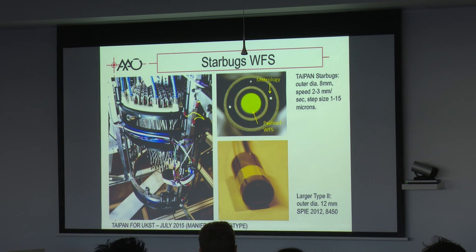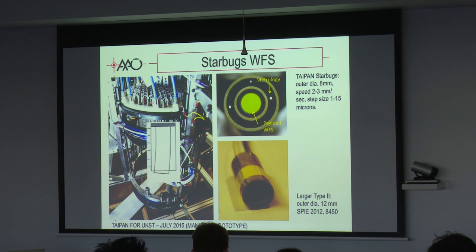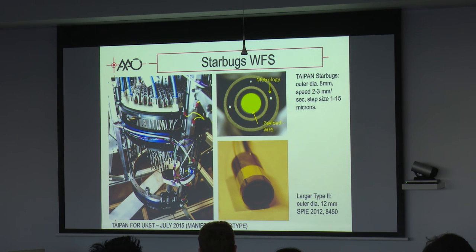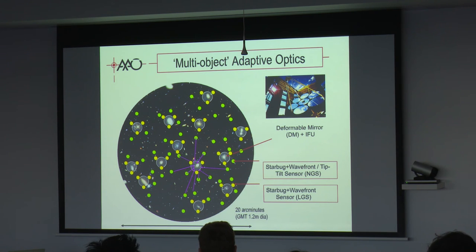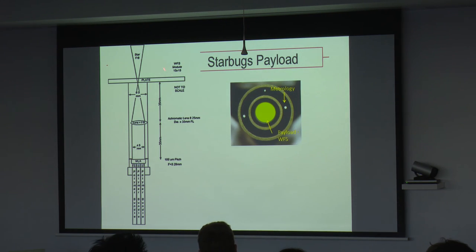The R&D we're doing here at North Ryde involves Starbugs. The idea is to get a wavefront sensor inside a Starbug. Starbugs are used for the TAIPAN instrument — an early image taken in July 2015 with 150 Starbugs. They have an outer diameter of 8 mm, steps of 2 or 3 mm, and very small step increments. Starbugs work with an outer tube and inner tube moving to step across the focal plane. The idea is to use Starbug-based wavefront sensors — the green dots here could all be wavefront sensors for multi-object AO — over a 20 arcminute field of view.